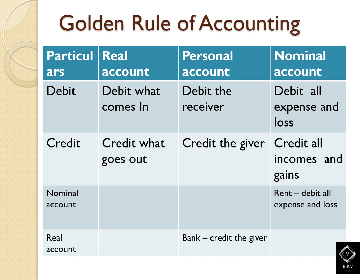Personal account, real account: debit what comes in, credit what goes out. Personal account: debit the receiver, credit the giver. Nominal account: debit all expenses and losses, credit all income.